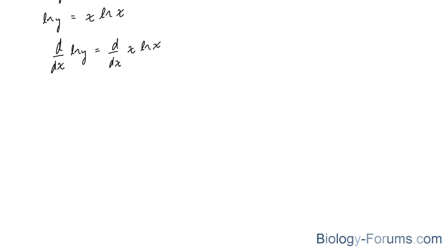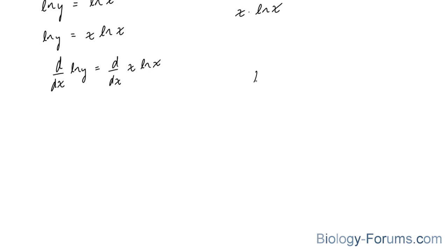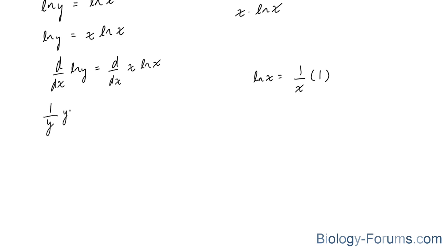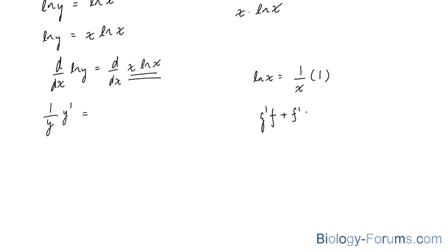If you recall from one of our previous videos, the derivative of ln x is equal to 1 over x times the derivative of x, which is 1. So we'll do the same thing. On the left side, we'll end up with 1 over y times y prime. And on the right side, we will use the product rule. The product rule tells us: find the derivative of g, multiply it to f, and then add the derivative of f times g. So in our case, this will be our f and this will be our g. Start off by finding the derivative of ln x, which is 1 over x.